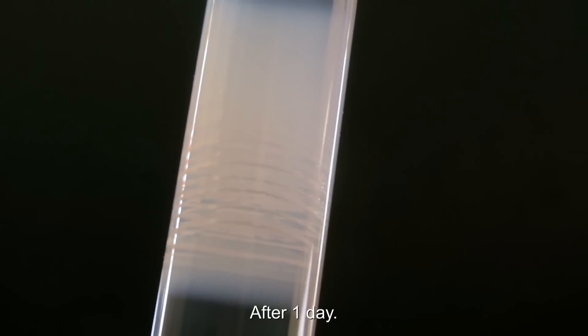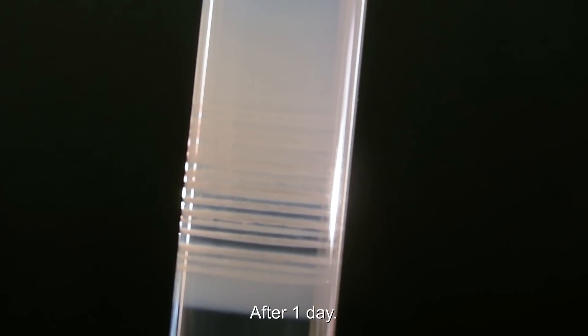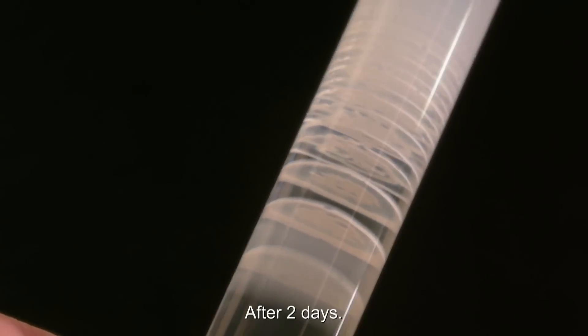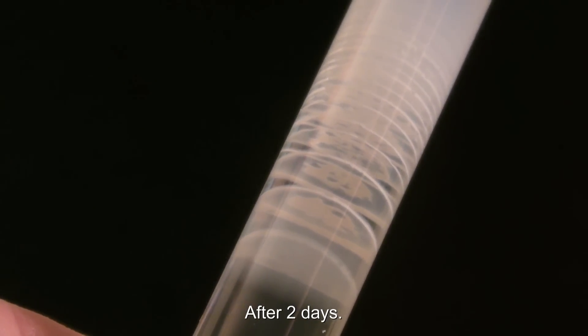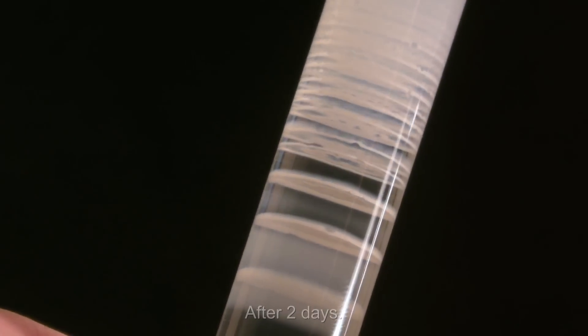In the following days the distance between the layers becomes larger. These layers are called Lisegang rings, which were first described by Raphael Lisegang in 1896. These can also be found in nature where they form in porous rock.